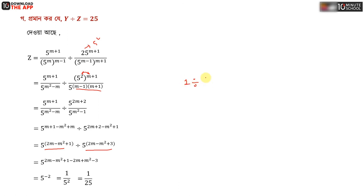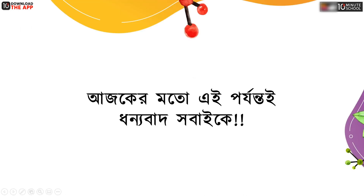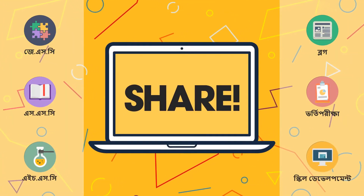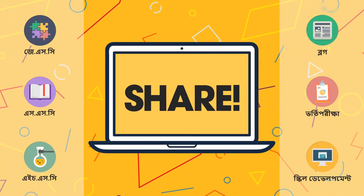So we get 5 inverse 2, or 1 by 5 squared, which is 1 by 25. Therefore y equal to 1 and z equal to 1 by 25. That means y into z equals 1 into 1 by 25, which equals 1 by 25, that means 25.